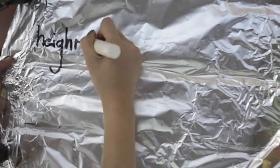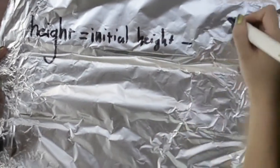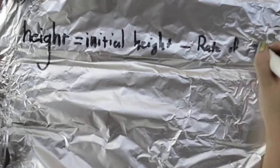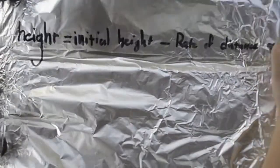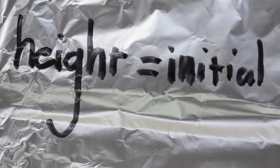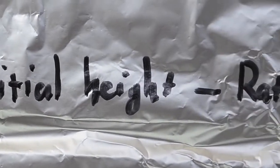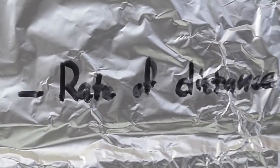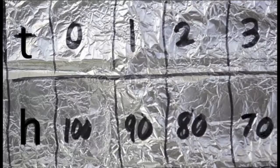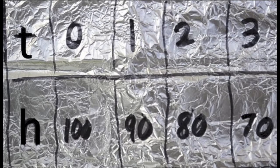To find the height after five minutes, we need to use this equation. Height equals initial height minus rate of distance times time. T represents time in minutes and H represents height in feet.